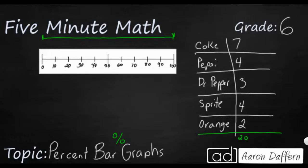And so 7 out of 20 people chose Coke, so I'm going to make that a fraction. 4 out of 20 chose Pepsi. 3 out of 20 chose Dr. Pepper. 4 out of 20 Sprite, so the same number of students chose Pepsi and Sprite. And then 2 out of 20 chose orange.